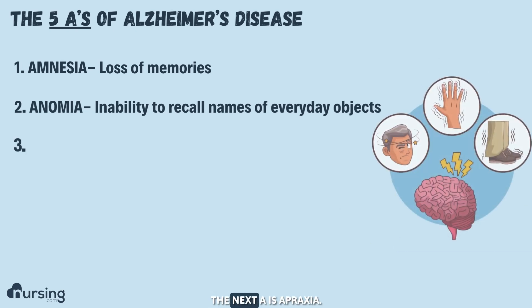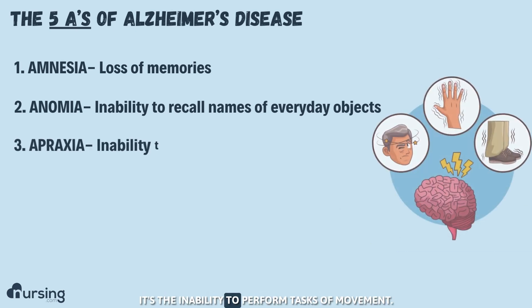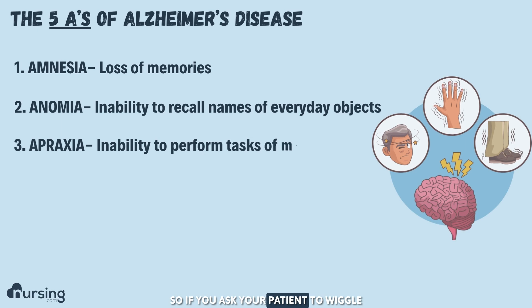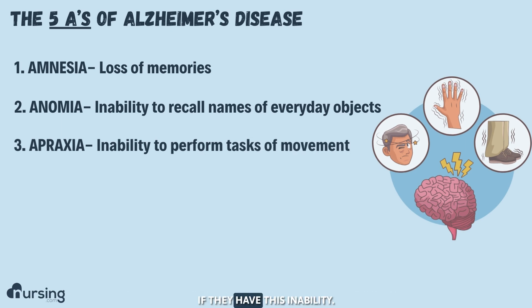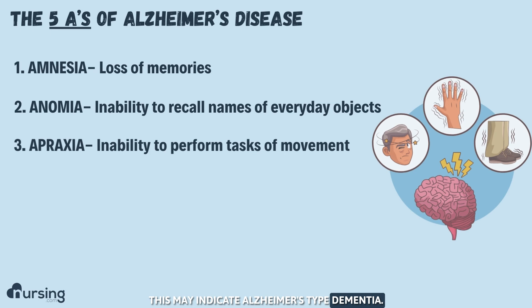The next A is apraxia. It's the inability to perform tasks of movement. So if you ask your patient to wheel their fingers or raise their hand or raise their feet, if they have this inability, this may indicate Alzheimer's type dementia.